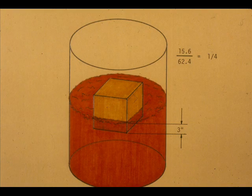15.6 pounds is a quarter of the 62.4 pound weight of a cubic foot of water. Therefore, the cubic foot of wood will sink three inches or one quarter of a foot.